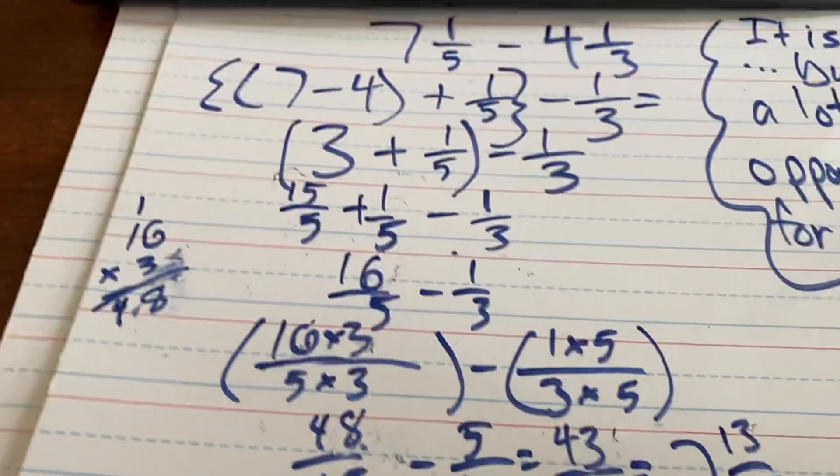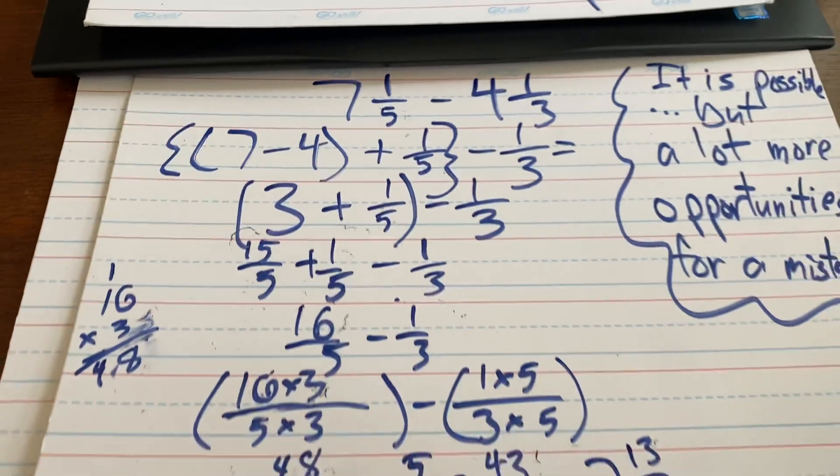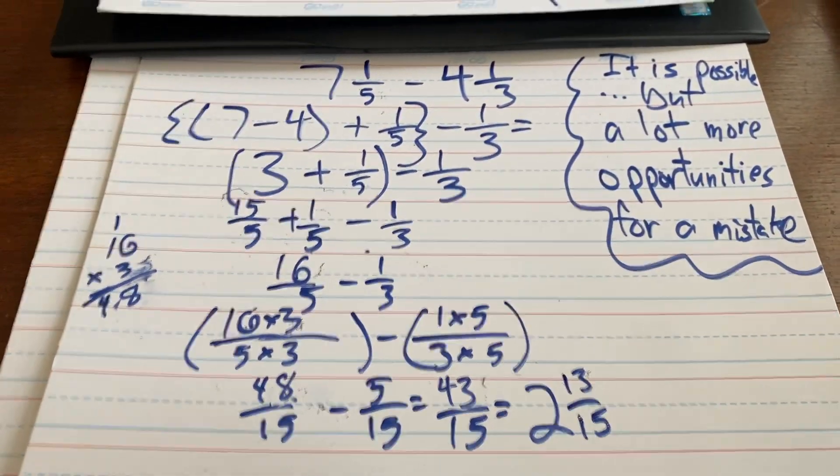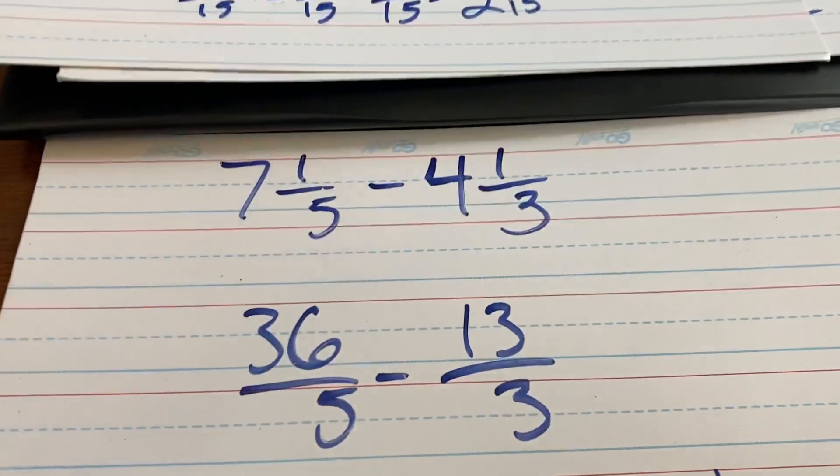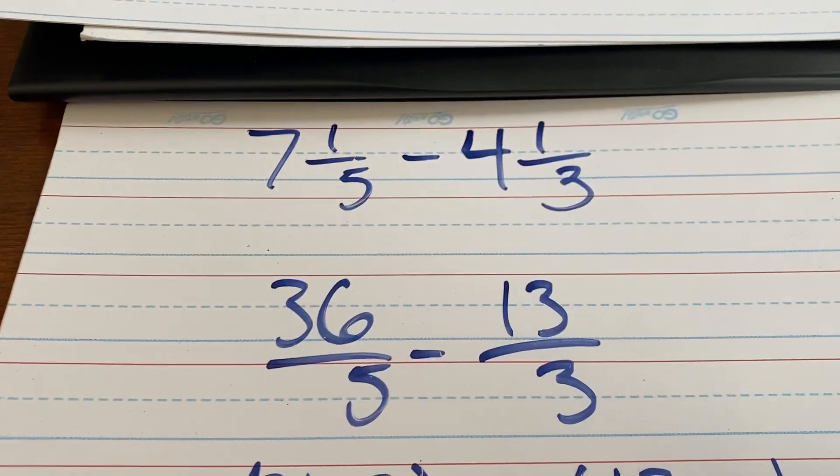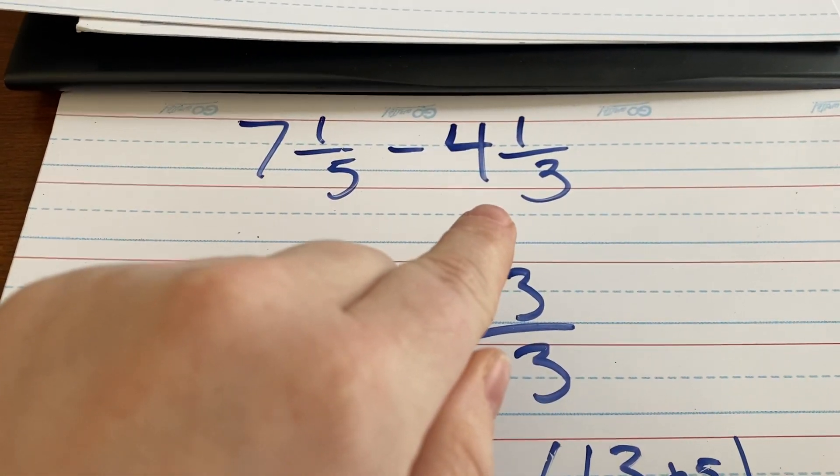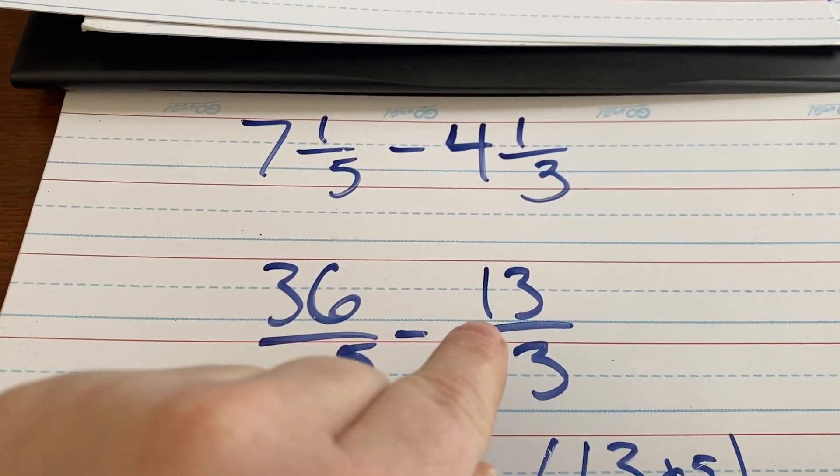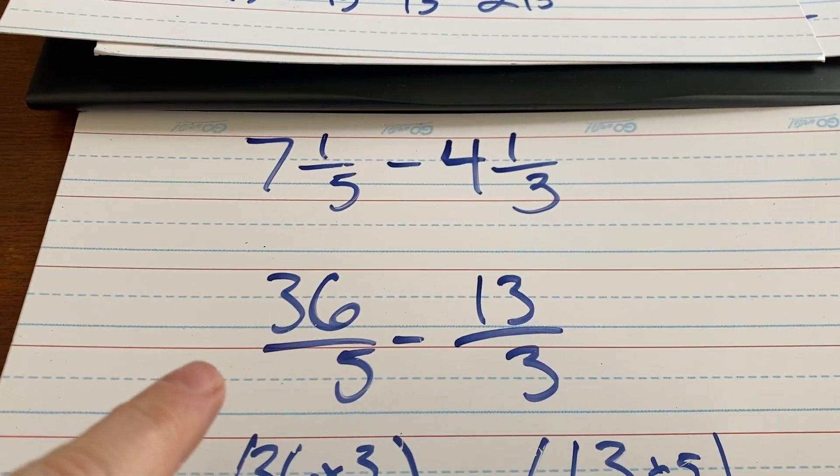So, yes, subtracting the whole numbers is possible, but then you're left with all of this. The easiest way to complete these problems is, right from the get-go, change them into improper fractions. Get rid of the whole number by rewriting it as 36/5, and the other whole number by writing it as 13/3. So, that's step 1. Rewrite it as an improper fraction.